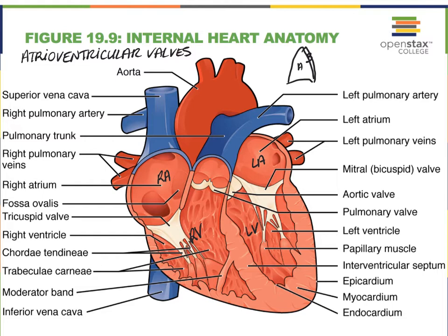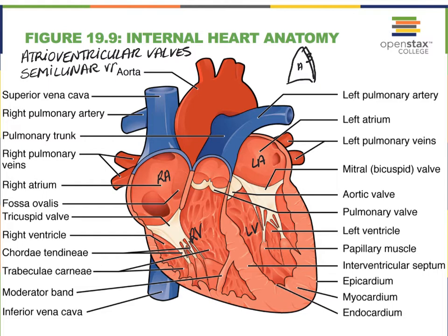In addition to the atrioventricular valves, we also have valves located at the base of the major arteries that leave the heart — at the base of the aorta, which you can barely see here, and at the base of the pulmonary trunk, which we can very clearly see here because of how the heart is twisted. We refer to those valves collectively as semilunar valves, and that literally means their cusps look like the shape of half a moon — semi meaning half, lunar referring to moon. Depending on whether they sit at the base of the pulmonary trunk or aorta, they're referred to as the pulmonary valve versus the aortic valve.